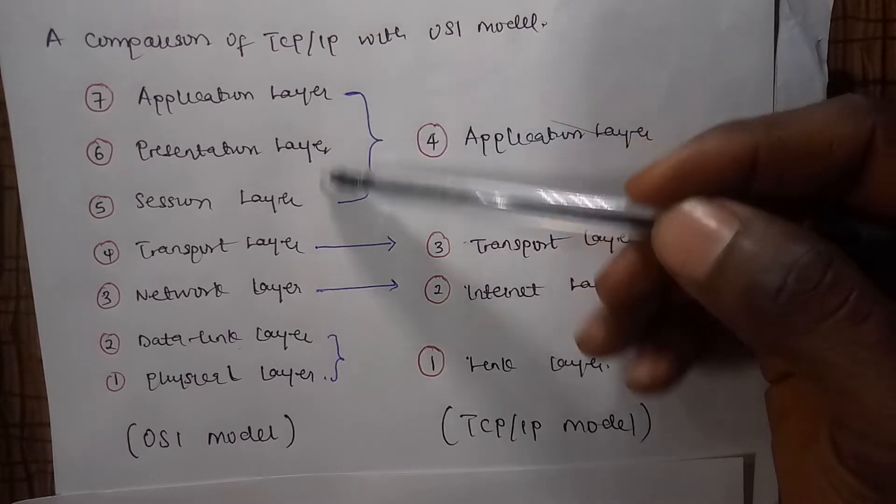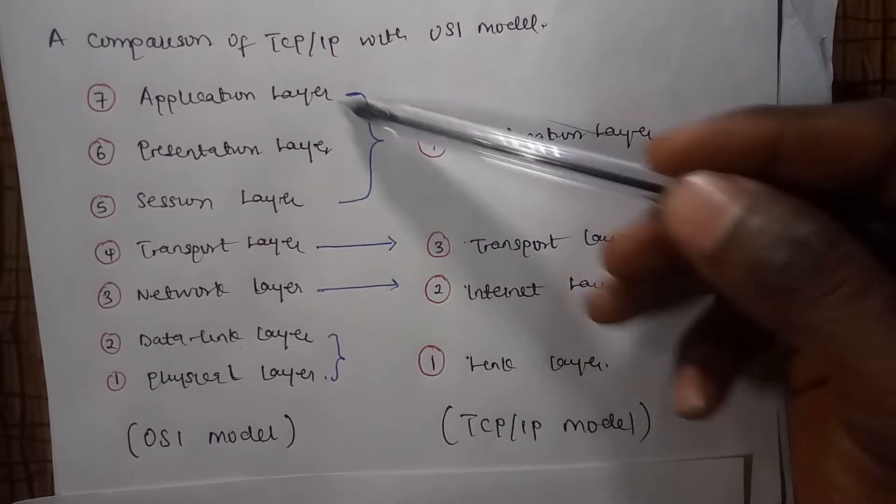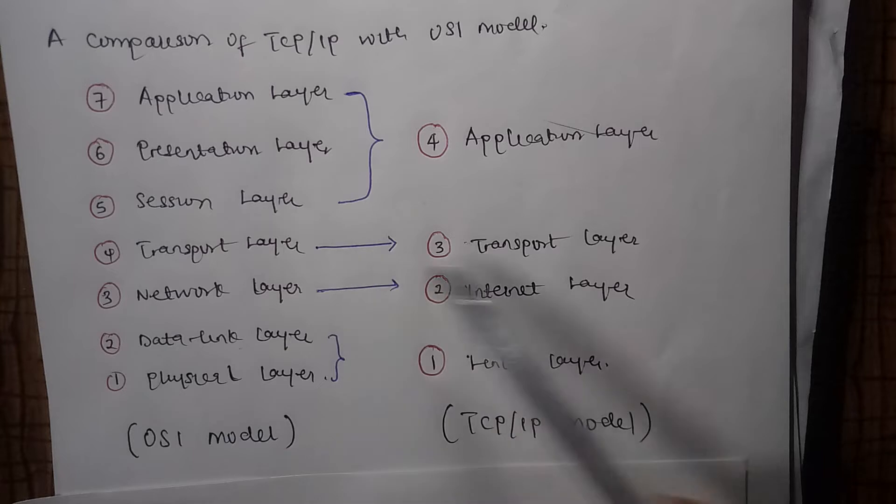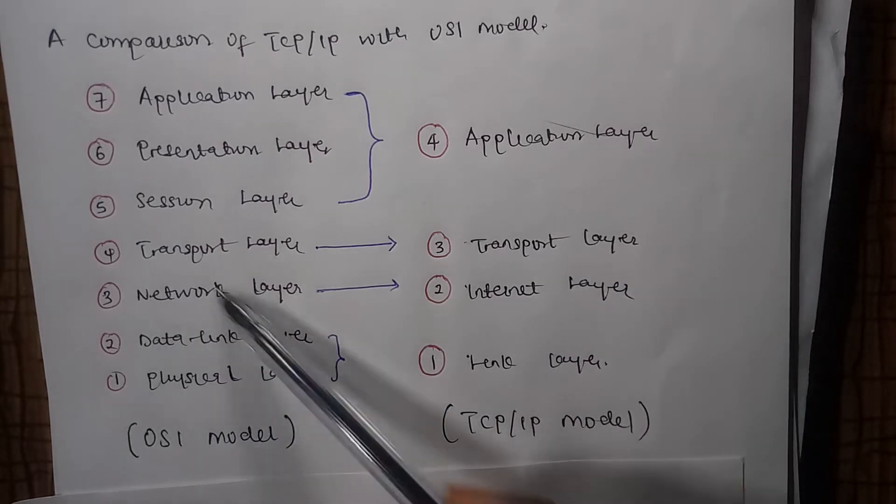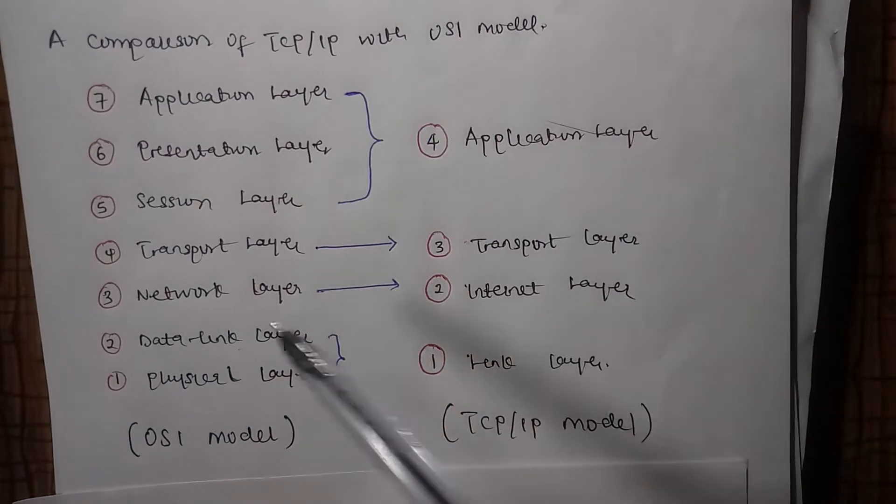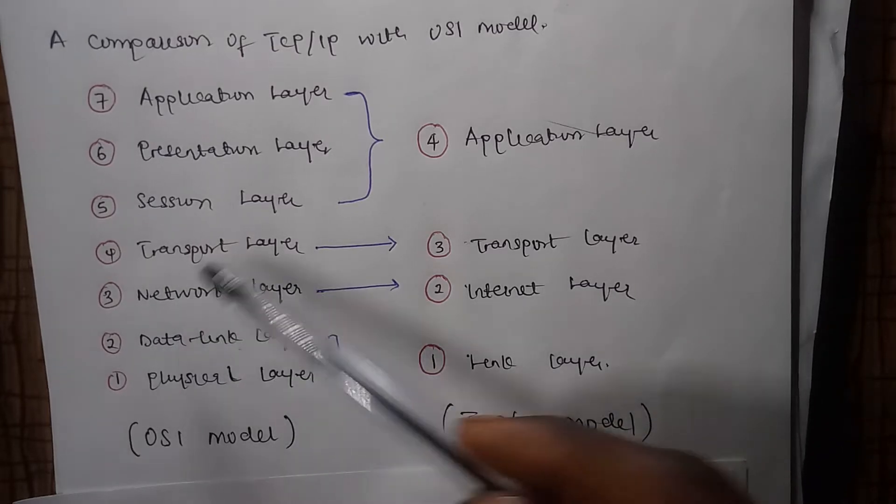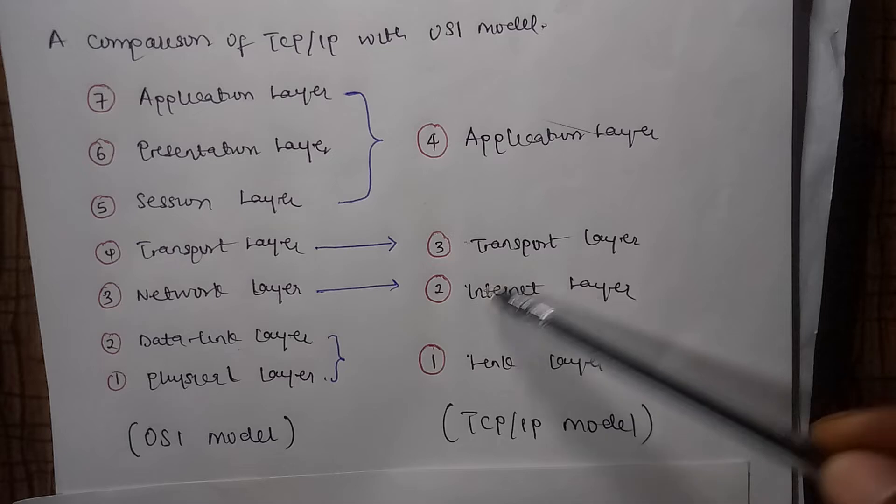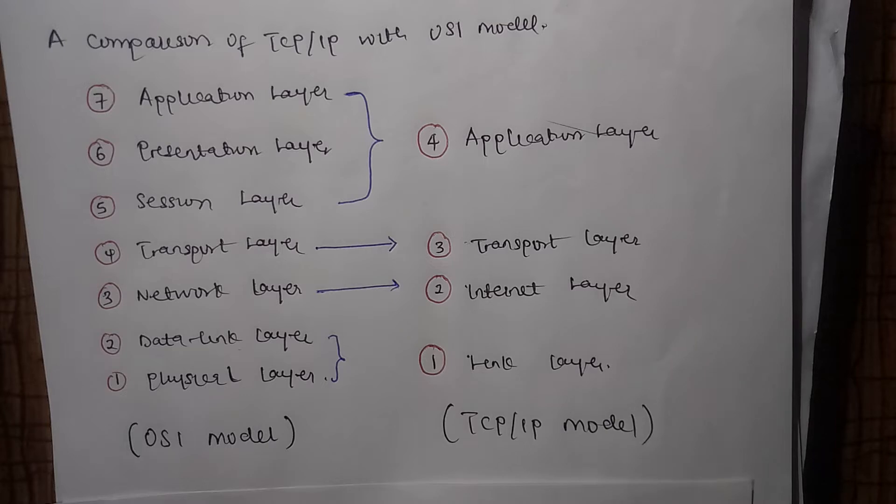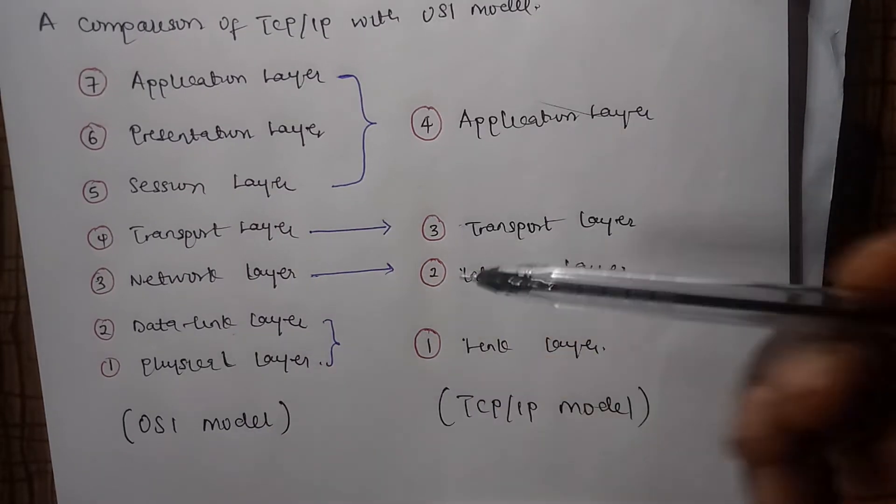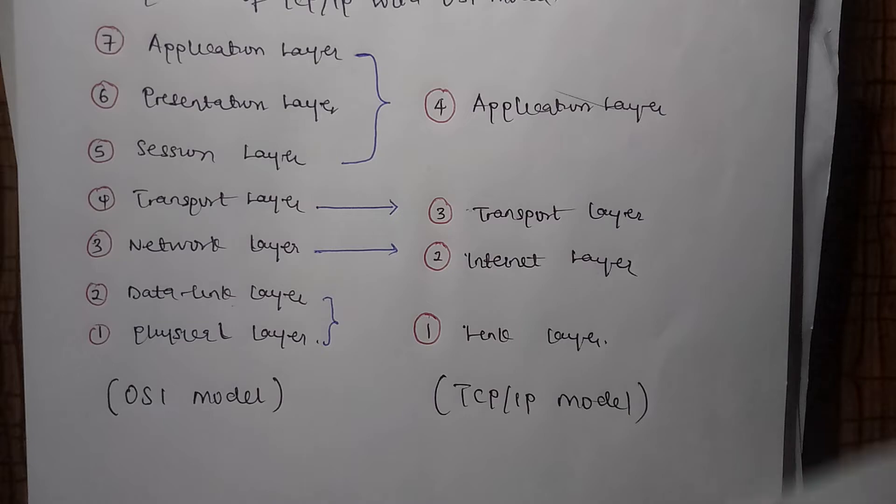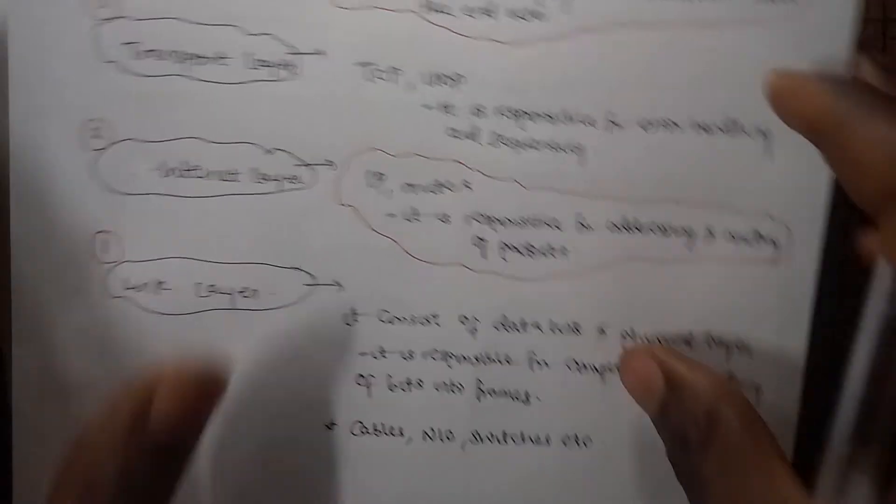We can see that these three layers—the seventh, sixth, and fifth layers in the OSI model—are merged to form an application layer just to make things simpler. Likewise, the transport layer remains the same. The network layer is replaced with internet, as you can see from TCP which is Transmission Control Protocol with Internet Protocol. The network layer is responsible for IP addressing and accessing the internet, so it's represented with the internet layer. While the data link layer and the physical layer are merged to form a single link layer. This is the comparison between the OSI model and the TCP/IP model.